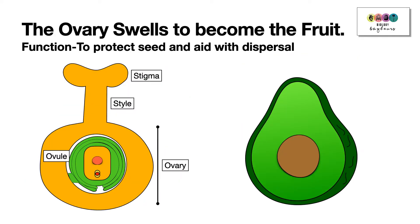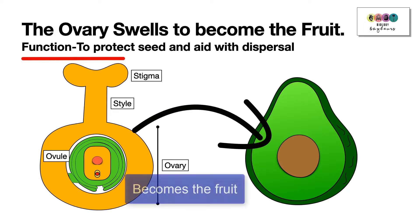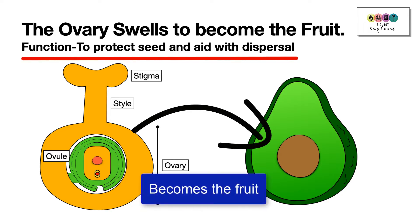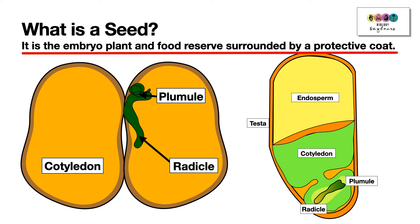What happens to the ovary of the flower? The ovary, after all these fertilizations, swells to become the fruit, and its function is to protect the seed and to aid with its dispersal. What is a seed? It's the embryo plant and its food reserve, all surrounded by a protective coat called the testa.